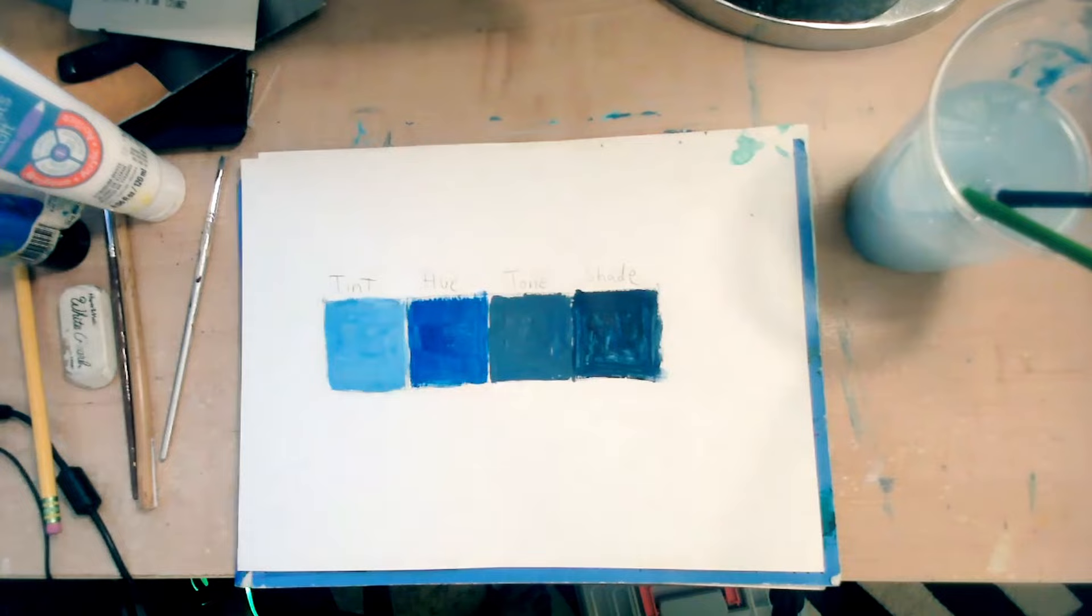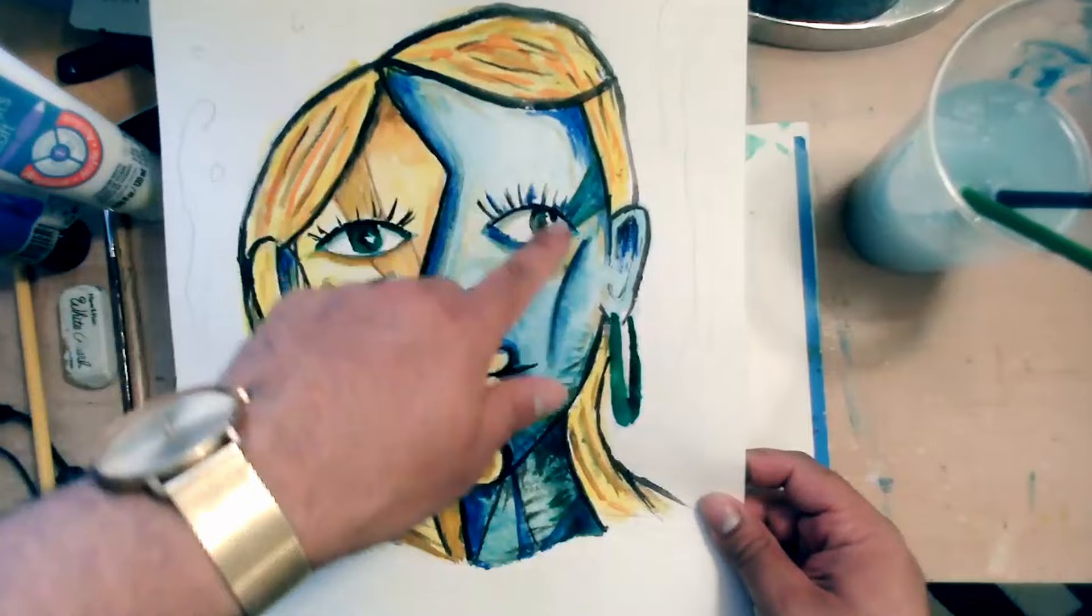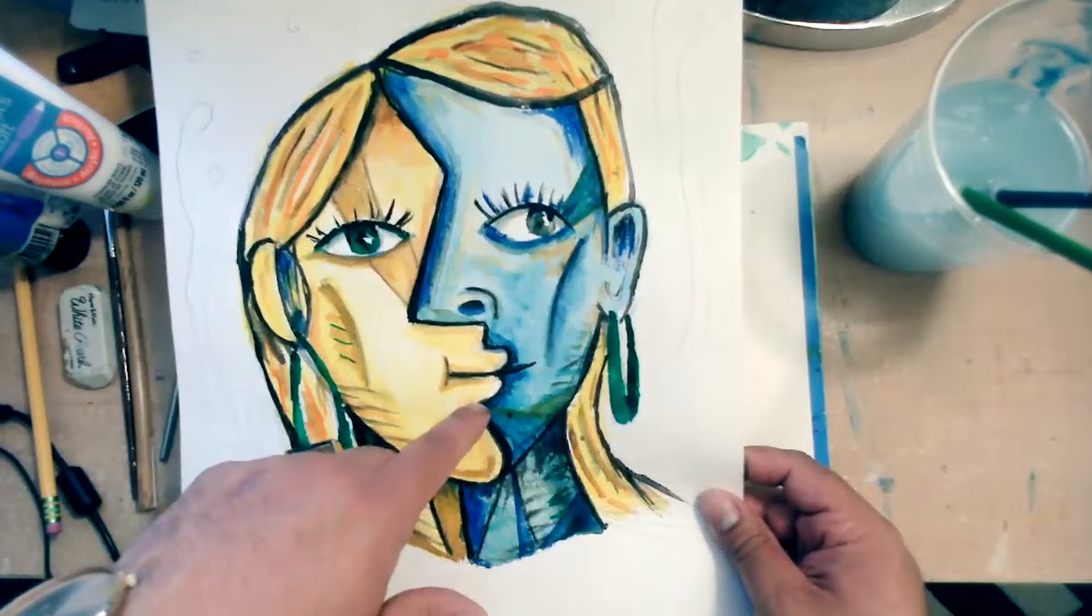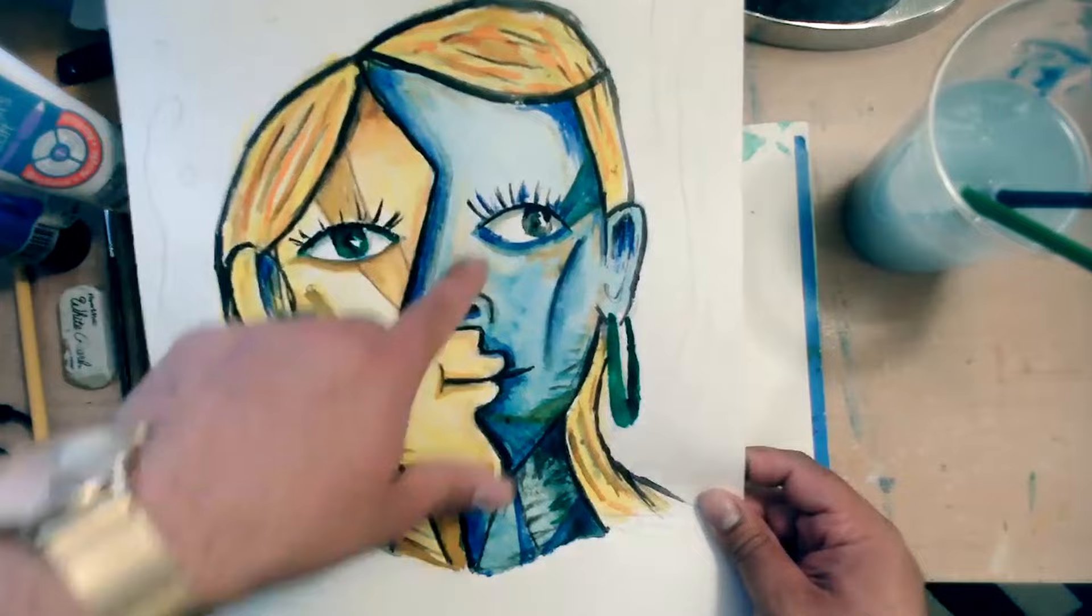And on a portrait, how would that look like in a portrait? See, it's got blue. Different types of blues. We got tints of blues, we got shades of blues, tones. We got the regular hue of blue by itself.